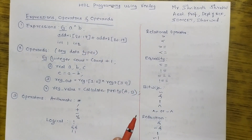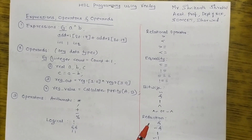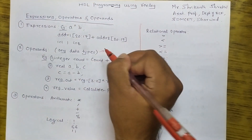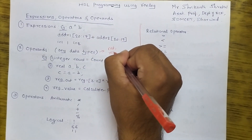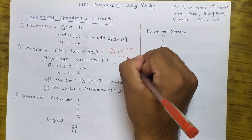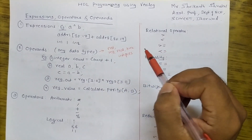The next part is operands. Operands can be any one of the data types, and we are very well aware of those. We have data types such as constants, integers, real numbers, nets, registers, time, part select — any of those. Operands can be declared with any of these data types.